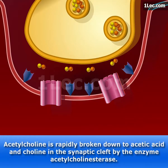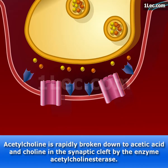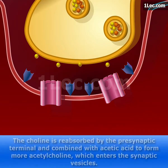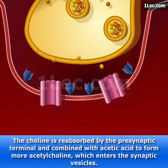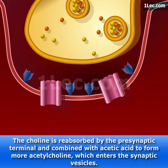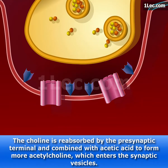Acetylcholine is rapidly broken down to acetic acid and choline in the synaptic cleft by the enzyme acetylcholinesterase. The choline is reabsorbed by the presynaptic terminal and combined with acetic acid to form more acetylcholine, which enters the synaptic vesicles.